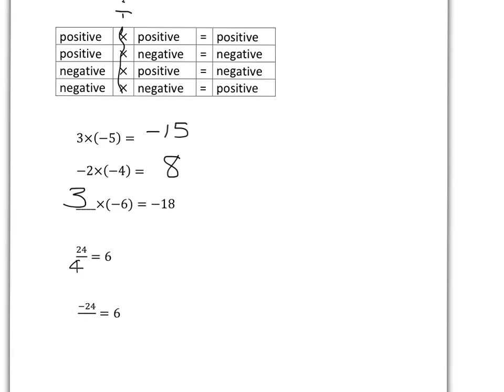What about this one here? Well, our answer is positive. So we're in those two situations. But the thing that's being divided is negative. So we're here. Negative divided by a negative will give a positive. So I have to put in a negative 4 to get our answer of positive 6.